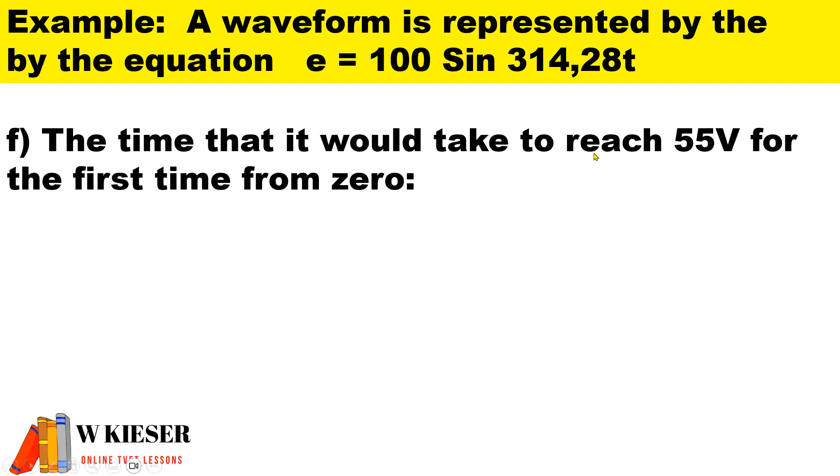In this question, what is the time that it would take to reach 55 volts for the first time from zero? This means the instantaneous value is 55 and the maximum value is 100, and we substitute our values in here and we are going to calculate the time. Mathematically speaking, here's a multiplication sign, so if we take 100 across it will become 55 divided by 100. Then we will take the sine across and it will become sin⁻¹.